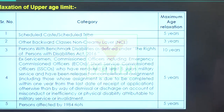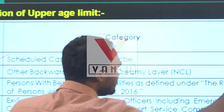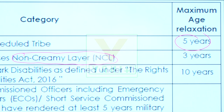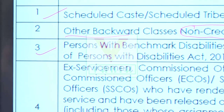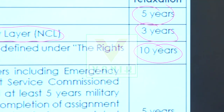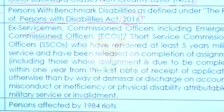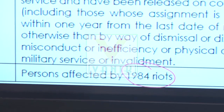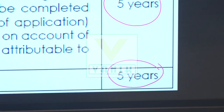Regarding age relaxation: Scheduled Caste and Scheduled Tribe candidates get 5 years of age relaxation. OBC candidates under the non-creamy layer — where family income is less than 10 lakhs per annum — get 3 years. Persons with disability get 10 years relaxation under the Persons with Disability Act 2016. Ex-servicemen and emergency commission service personnel get 5 years relaxation. Candidates affected by the 1984 riots also get 5 years of age relaxation.